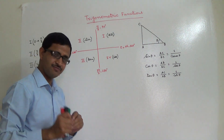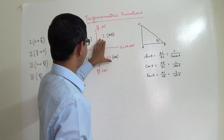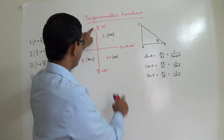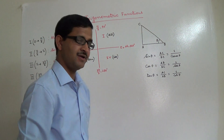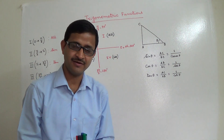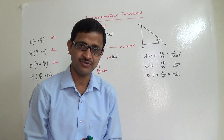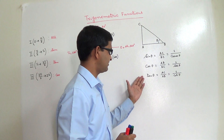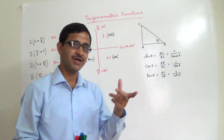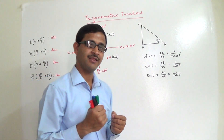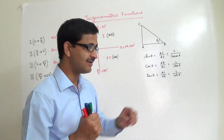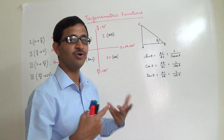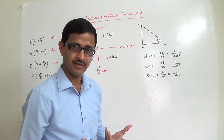One interesting point: in the first quadrant, for any angle between 0 and π/2, all are positive — which aligns with your prior knowledge of trigonometric ratios from class 9 and 10. Because for any acute angle, you can always construct a right-angled triangle and measure the ratio of its sides, which will always be positive.